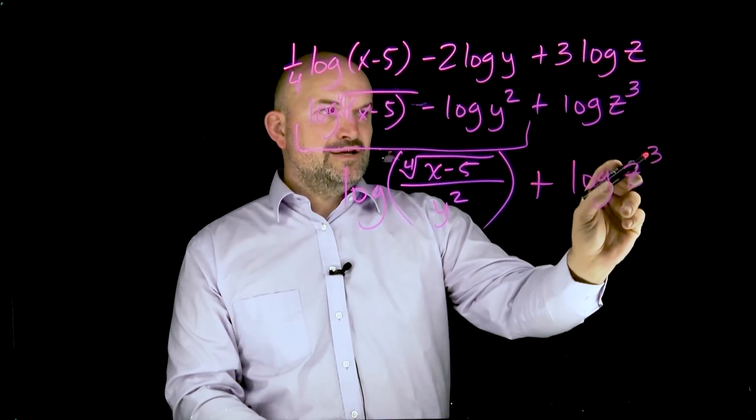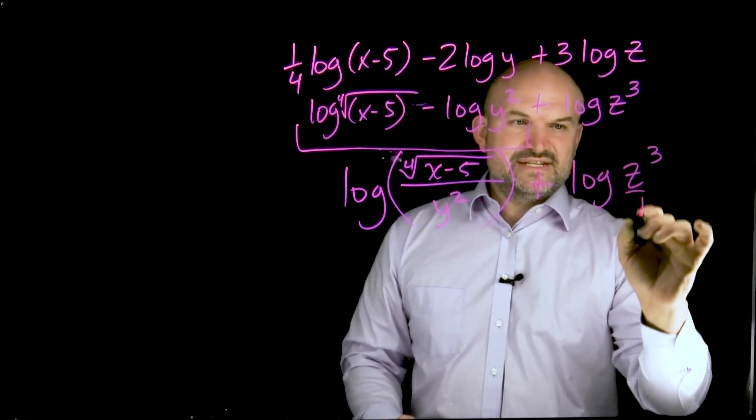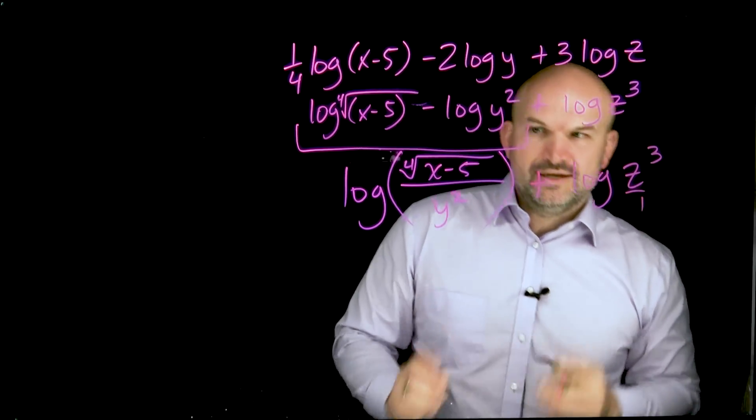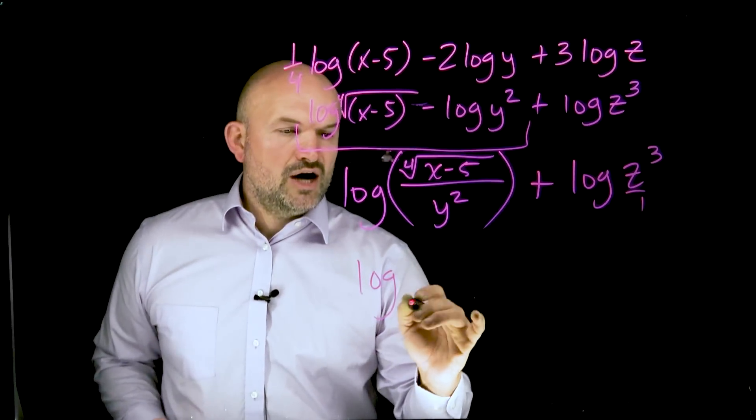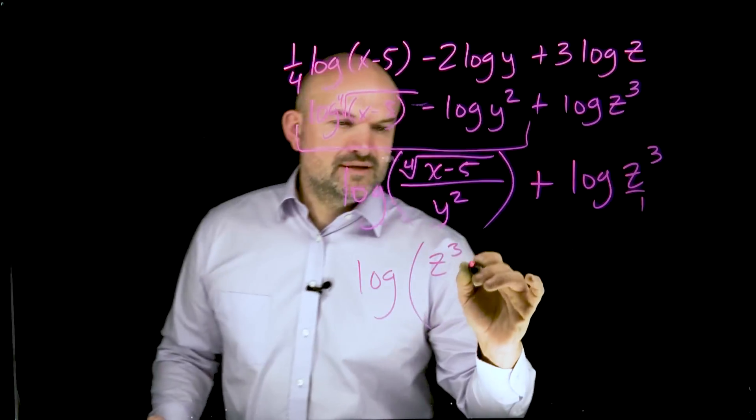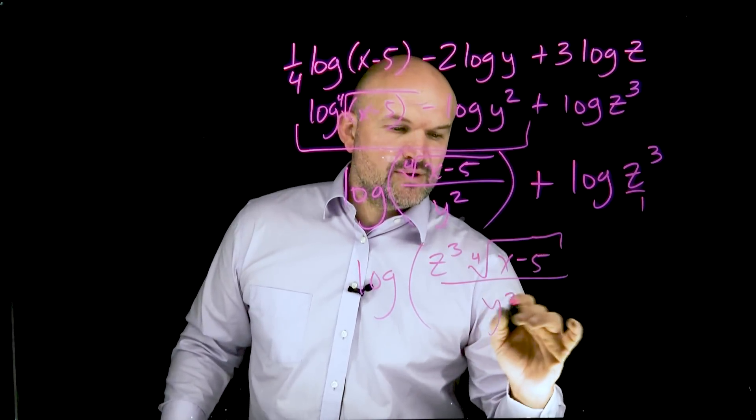Well, remember, you can think of z cubed as z cubed over one. So therefore, it'd be multiplied in your numerator. So now I can combine this to log of z cubed times the fourth root of x minus five all over y squared.